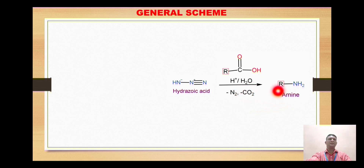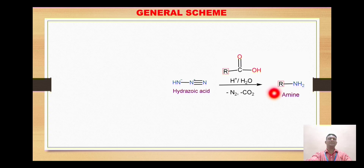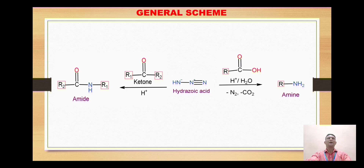This leads to the formation of amine RNH2. If we look at hydrazoic acid and the carboxylic acid and remove N2 (nitrogen) and carbon dioxide, only the NH along with R and H remain as the product, giving RNH2, which is called an amine. When hydrazoic acid is treated with a ketone, there is formation of an amide, that is C-O-N-H.